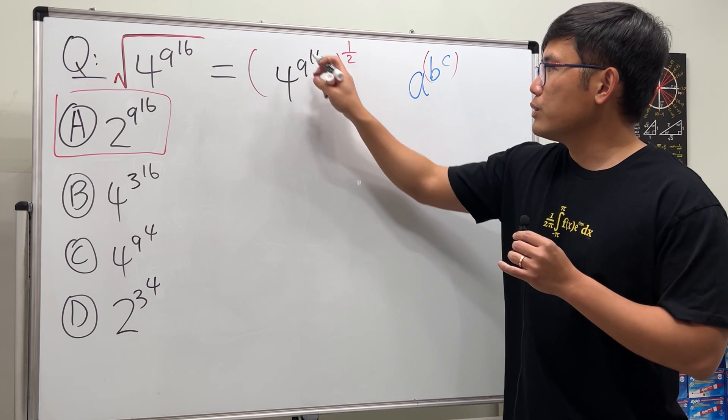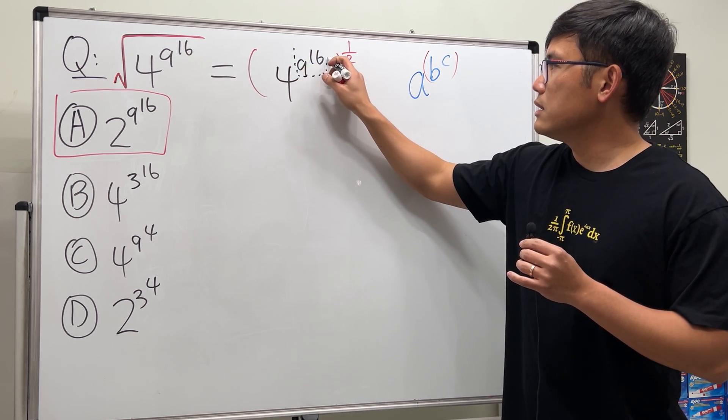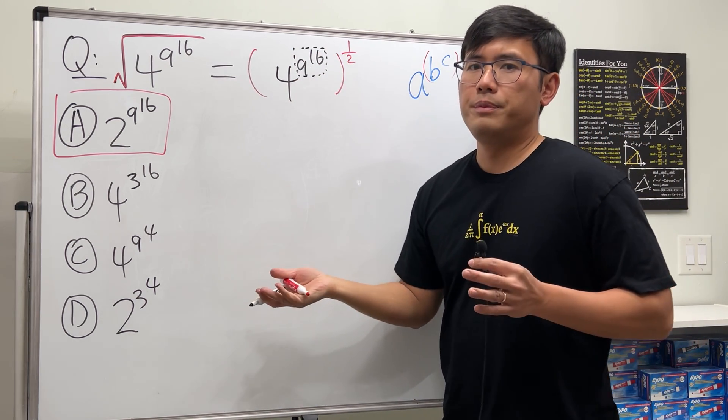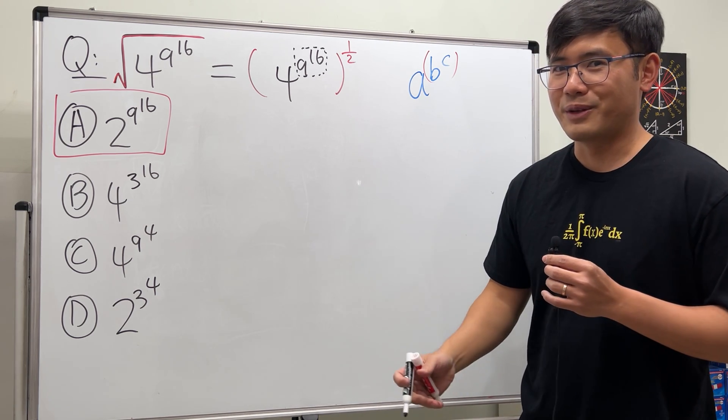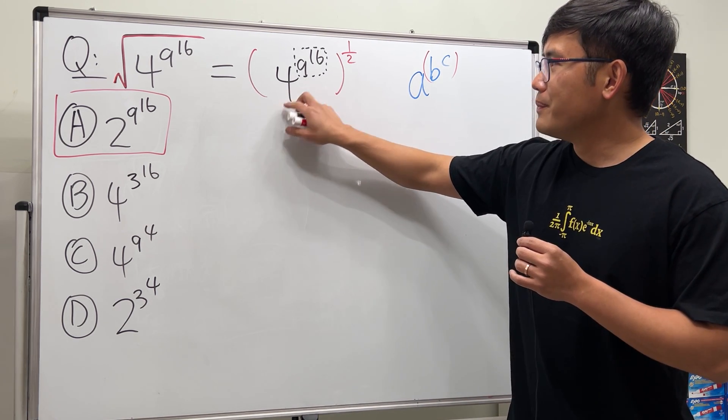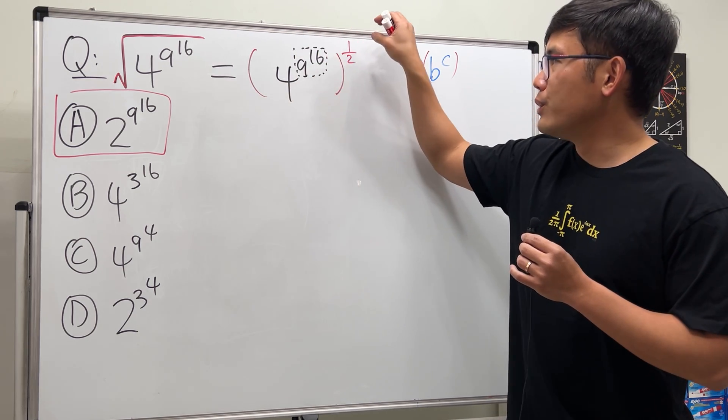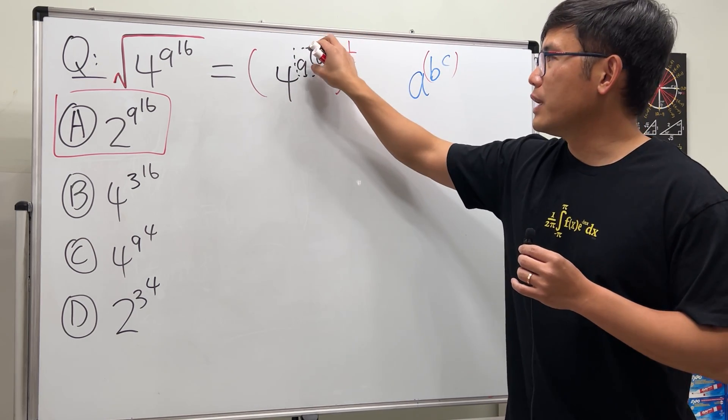I don't know what it is, maybe you guys can help me out with your calculator. So we have 4 to this power and then to the one-half power. So we can take this and then multiply, and we'll be looking at this as 4 to the one-half times 9 to the 16th power.